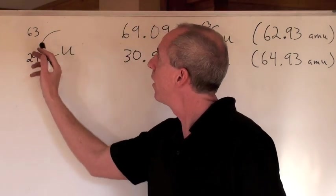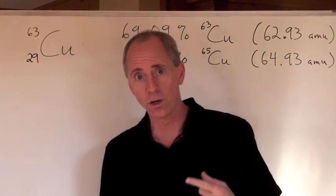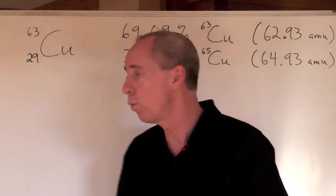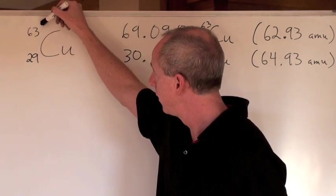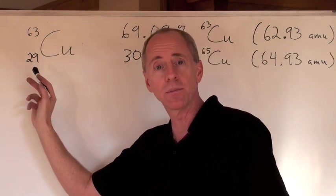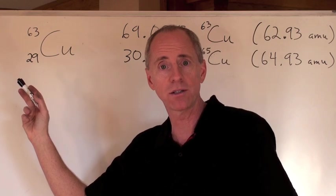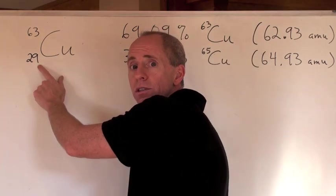Now, by the way, remember that this is a type of abbreviation here for giving different isotopes, where we put a number up here called the mass number, which is the mass of that isotope, and down here the atomic number, which is what copper is on the periodic table, element number 29.